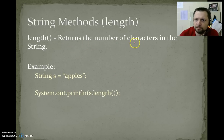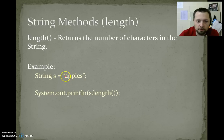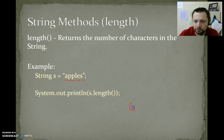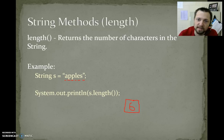Length — returns the number of characters in the string. So String s equals "apples". If we do System.out.print s.length(), we get 6 — there are six different letters. Some of you might be thinking the last letter's at spot 5, so the length is 5. No — zero, one, two, three, four, five is six different values. It's asking how many letters there are, not where the last one is located.